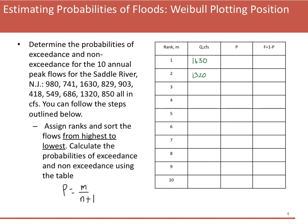I've ranked all the flows from largest to smallest, and now I'm going to use the equation P = M / (N+1) to calculate the probability of exceedance for each flow. For that first one — 1630 — M is 1, and N+1 is 11. The probability of exceedance is 1 over 11, which is 0.09, or 9%. And F, the probability of non-exceedance, is 1 minus P, which is 0.91.